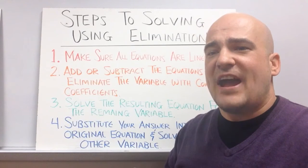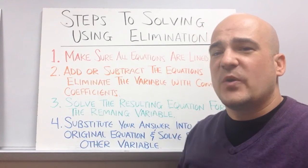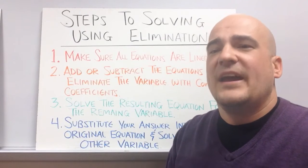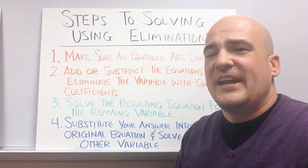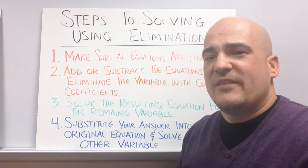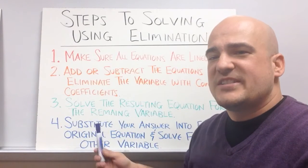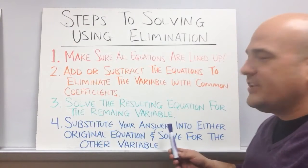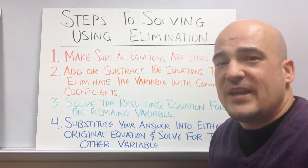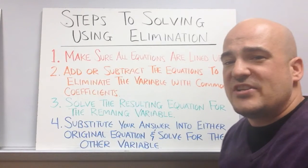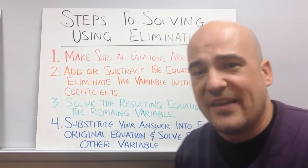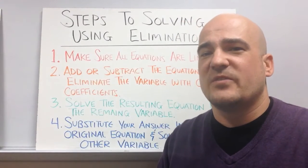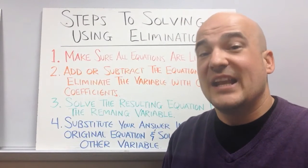The third step, after you've added the equations, you're going to solve that resulting equation for one of the variables. And then finally, after you solve and find one of the variables, you're going to substitute that variable back in. You can substitute that variable back into either one of the equations to solve for the other variable. So those are the four steps we're going to use to solve systems using elimination.